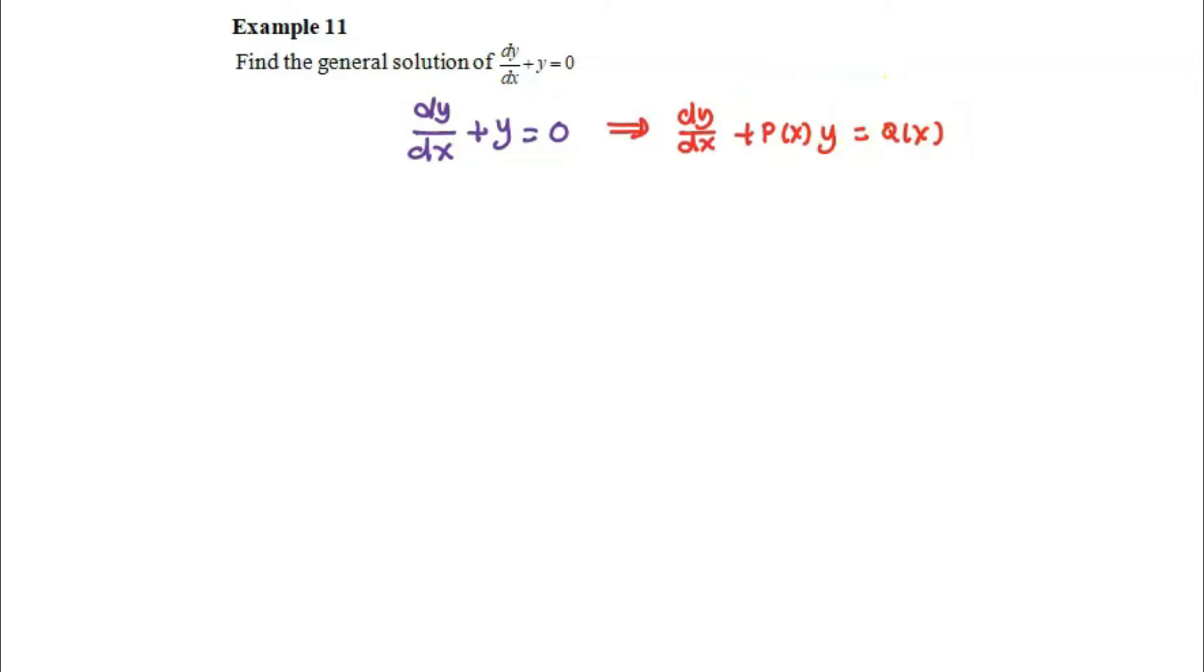Here we are able to see that the coefficient of dy dx is 1 and we have the y term as well as the constant 0 on the right side.